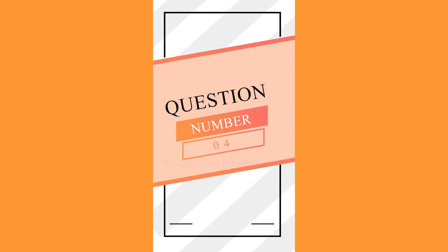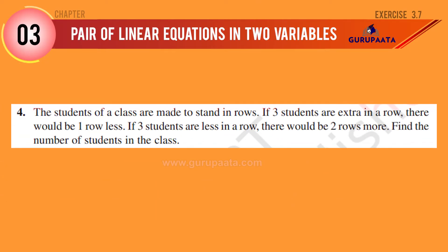This is question number four. The students of a class are made to stand in rows. If three students are extra in a row, there would be one row less. If three students are less in a row, there would be two rows more. Find the number of students in the class.